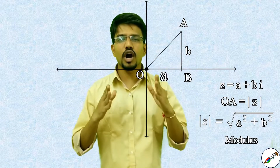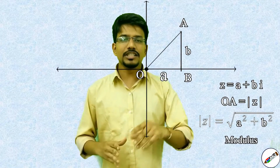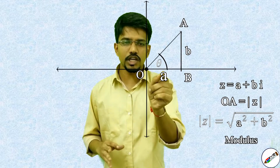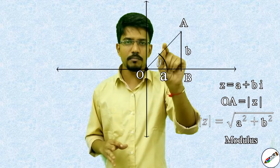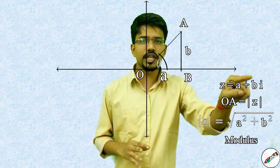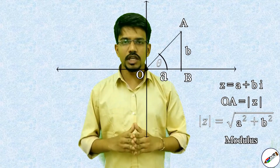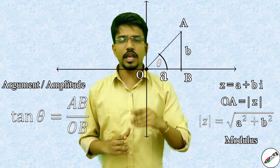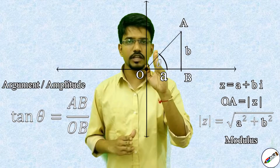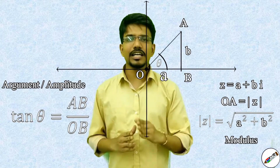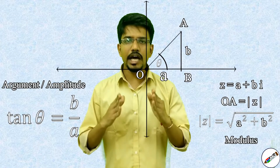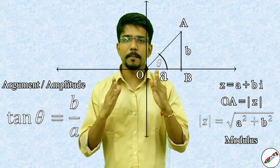The amplitude or argument of a complex number is the angle that mod of z makes with the positive direction of the x-axis. Here, theta is the angle made by this complex number with the positive direction of the real axis. From triangle OAB, tan theta equals AB upon OA, where AB is b units and OA is a units. Therefore, tan theta equals b upon a, and theta — the amplitude or argument of z — is tan inverse of b by a.